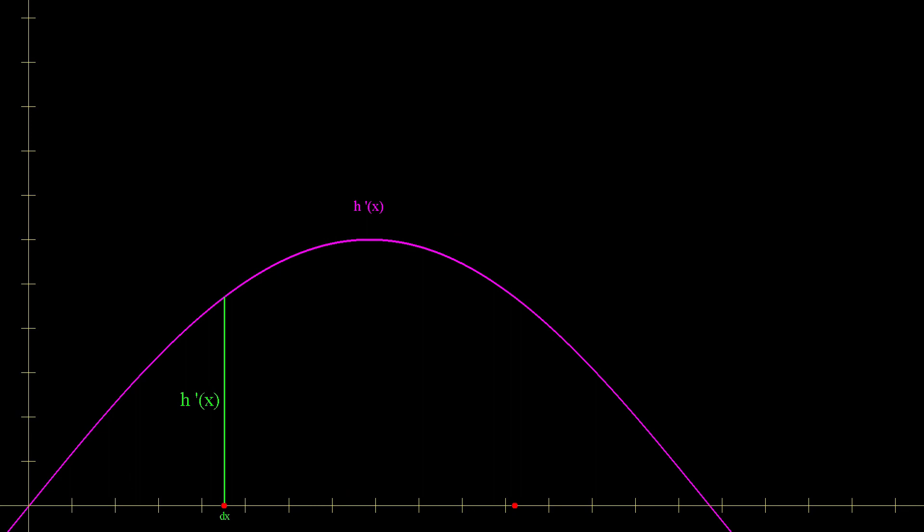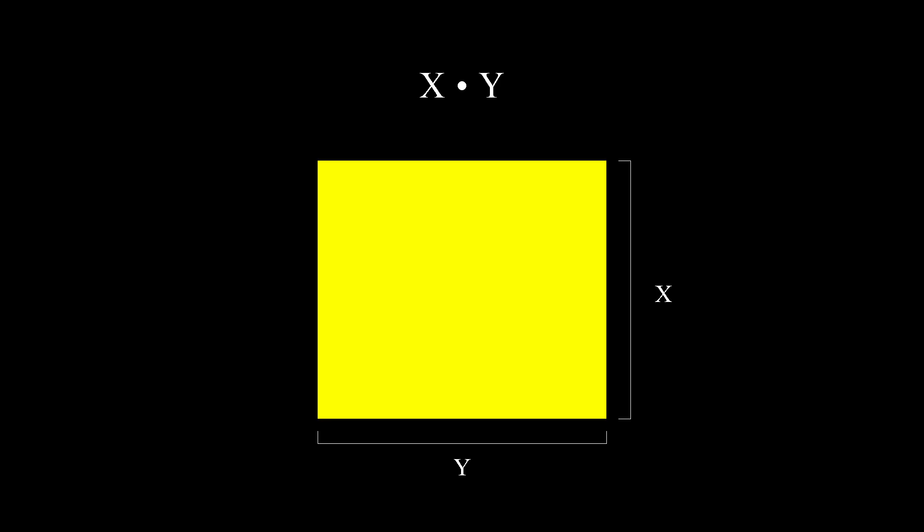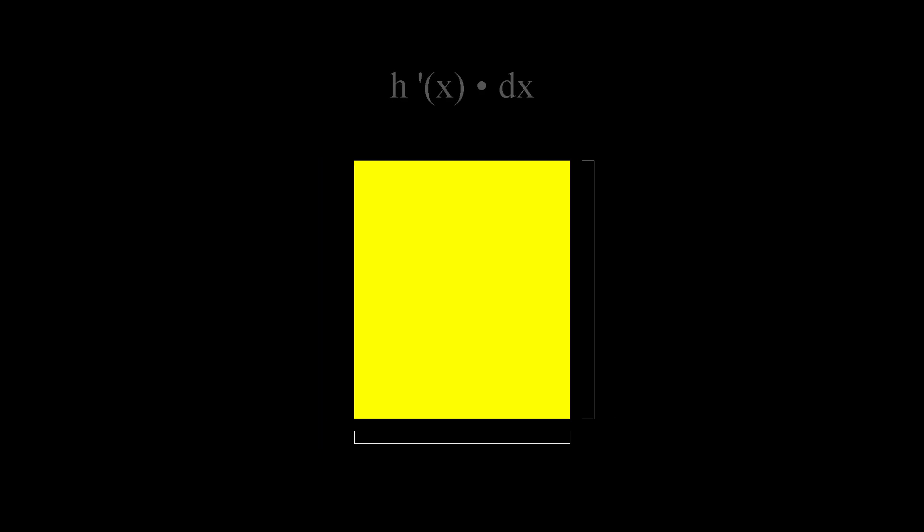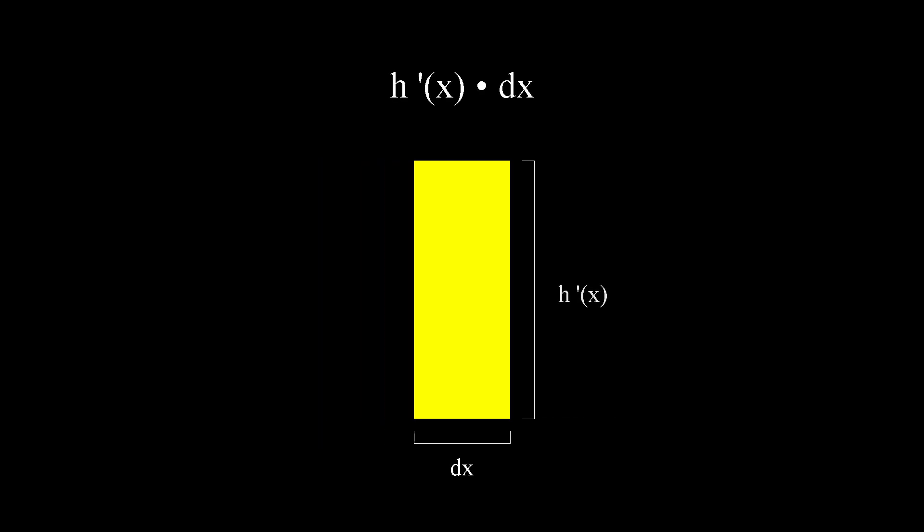This probably will seem odd to you, because how exactly is dh of x related to the area of this thin rectangle? Well if you think about it, this is just another way of expressing the product of two numbers or variables. Look at this example. We can let y be a horizontal line and x be a vertical line. The area between these lines is just the product of x and y. Similar case for h prime and dx.